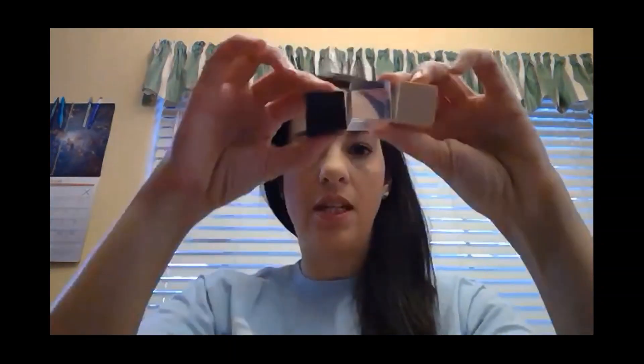In order to model what density is, we're going to start off by looking at some cubes. These cubes here are all the same exact size. That means they all have the same volume. Volume is how much space something takes up.